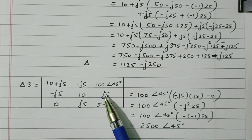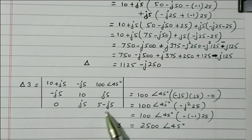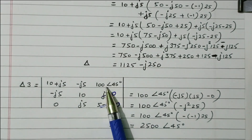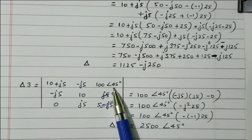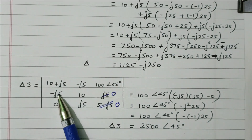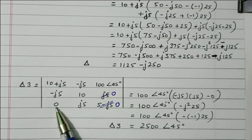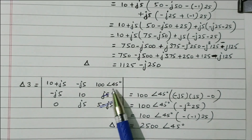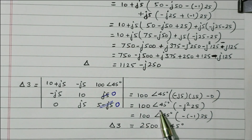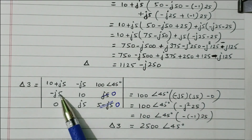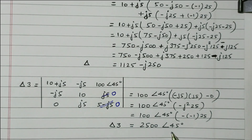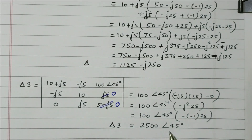Now we find delta_3 by replacing the third column with the voltage matrix [100∠45°, 0, 0]. Since the two lower voltage entries are 0, expanding gives: 100∠45° × [(−J5)(J5)] = 100∠45° × (−J²×25) = 100∠45° × 25 = 2500∠45°. So delta_3 = 2500 with an angle of 45 degrees.